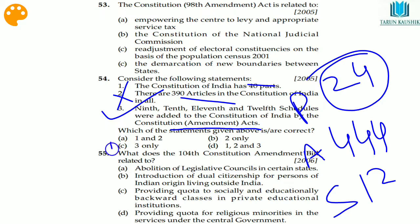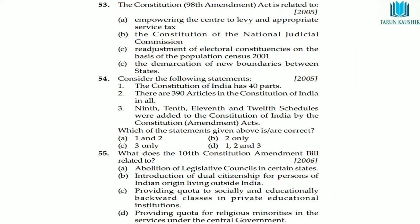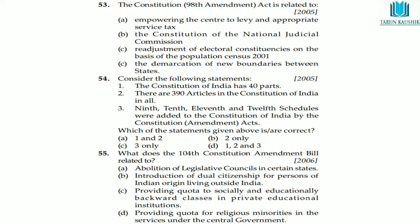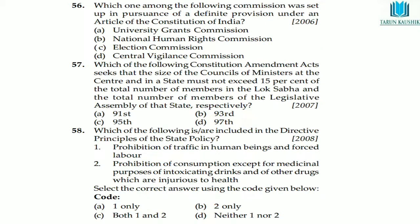Question 55: the 104th Amendment Bill is related to providing quota to the socially and educationally backward classes in private educational institutions. The 104th Amendment is related to providing quota to the weaker sections — socially and educationally backward classes.